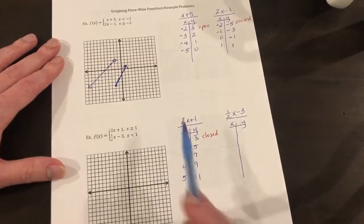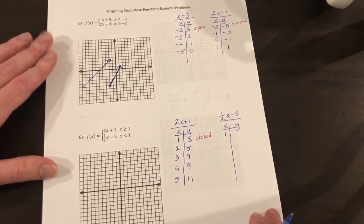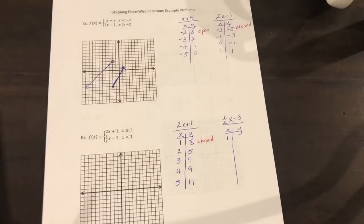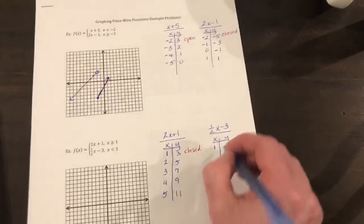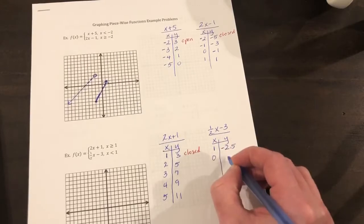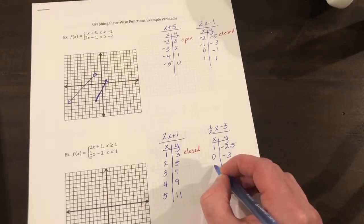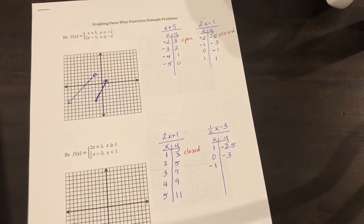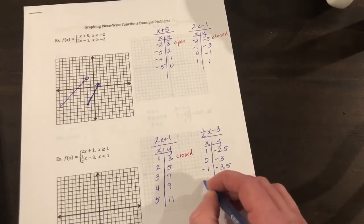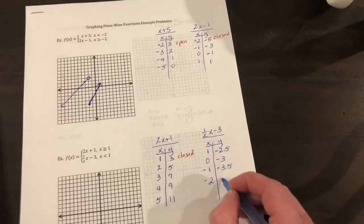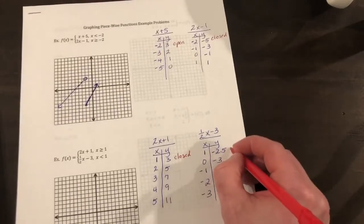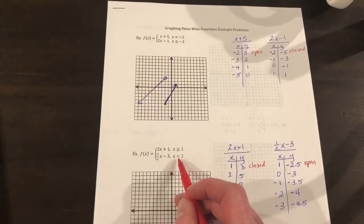Now we're going to pick values less than 1 for the branch one-half x minus 3. We include 1: one-half of 1 minus 3 is negative 2.5. Plugging in 0 gives negative 3. Negative 1 gives negative 3.5. Negative 2 gives negative 4. This branch is going to be open because there's no equal-to sign at x equals 1.